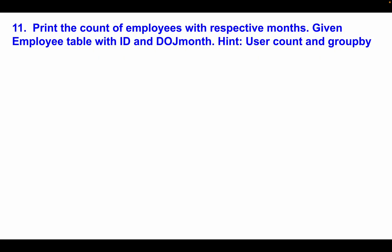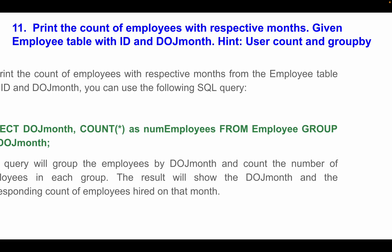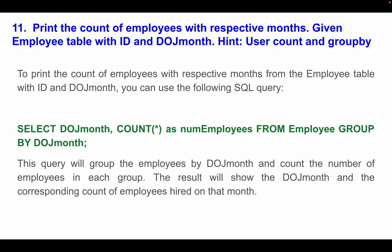Question 11: Print the count of employees with respective months from the employee table with ID and date of joining month. The hint given was to use COUNT and GROUP BY. You can use the following SQL query: SELECT date_of_join_month, COUNT(*) AS number_of_employees FROM employee_table GROUP BY date_of_joining_month. This query groups employees by their joining month and counts the number in each group, showing the month and the corresponding employee count.